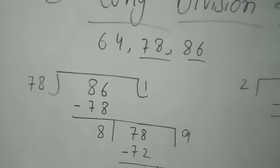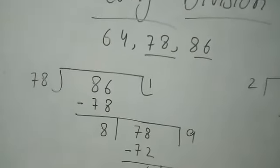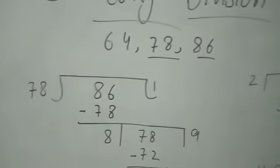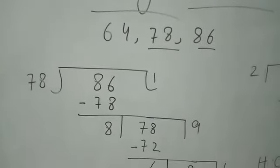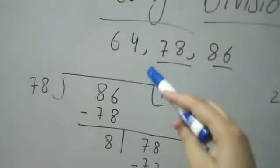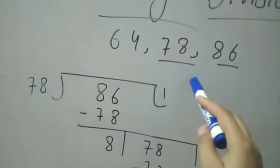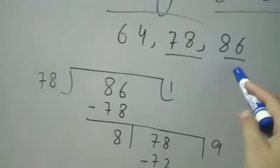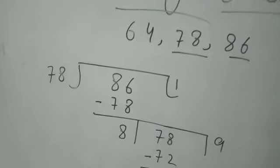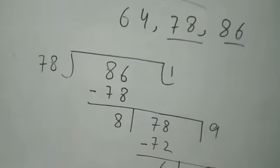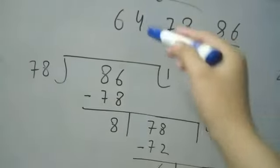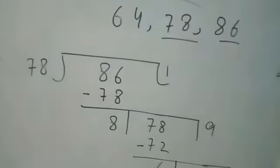The third method to find the HCF is the long division method. We have to find the HCF of 64, 78, and 86 using the long division method. In the first step, from the three numbers, we choose 2 numbers.